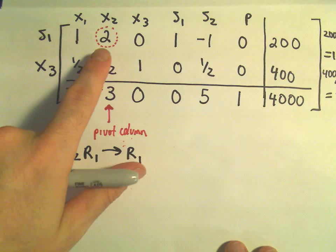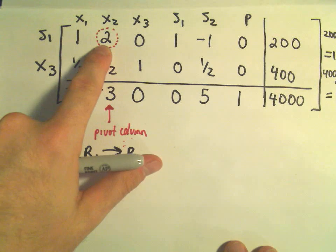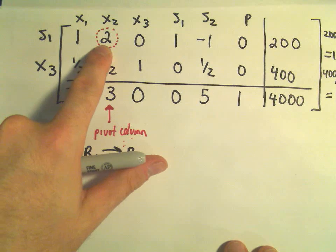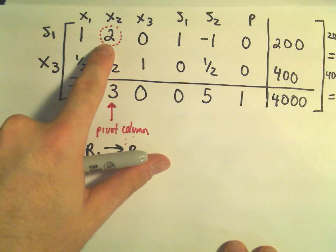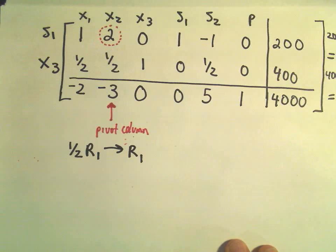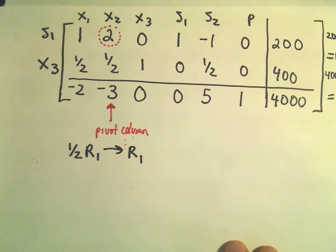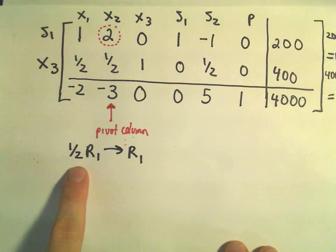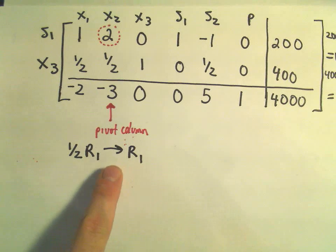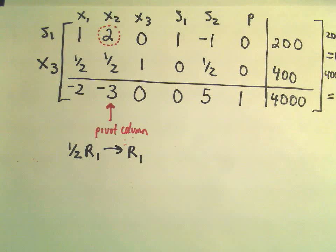We decided that this 2 is going to be our pivot element, but we have to make this pivot element into a 1. So I'm going to take one-half of the first row, and that's going to turn into my new first row.